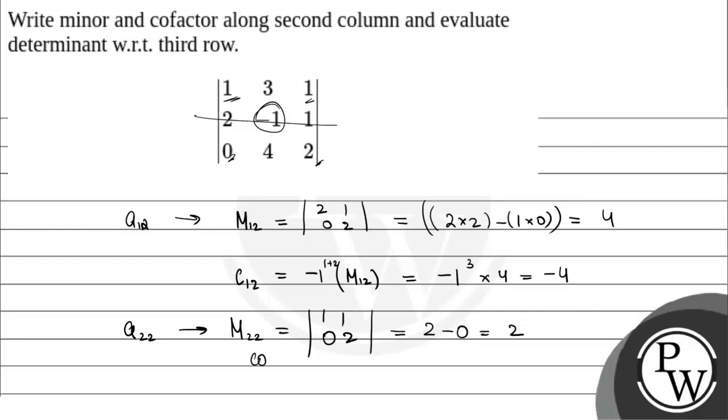For cofactor, we have minus 1 to the power 2 plus 2, which is 4. Since the power is even, this becomes plus 2. So the cofactor C₂₂ is plus 2.